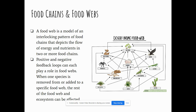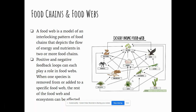Positive and negative feedback loops can each play a role in food webs. When one species is removed, the rest of the food web and ecosystem can be affected. For example, if there was a horrible drought and no grass was available in a desert biome, the grasshopper might become more dependent on the cactus. That increased dependency could decrease the cactus population, and eventually the grasshopper population could decrease too — potentially causing a decrease in the lizard as well, because of the different food sources that interact with each other.